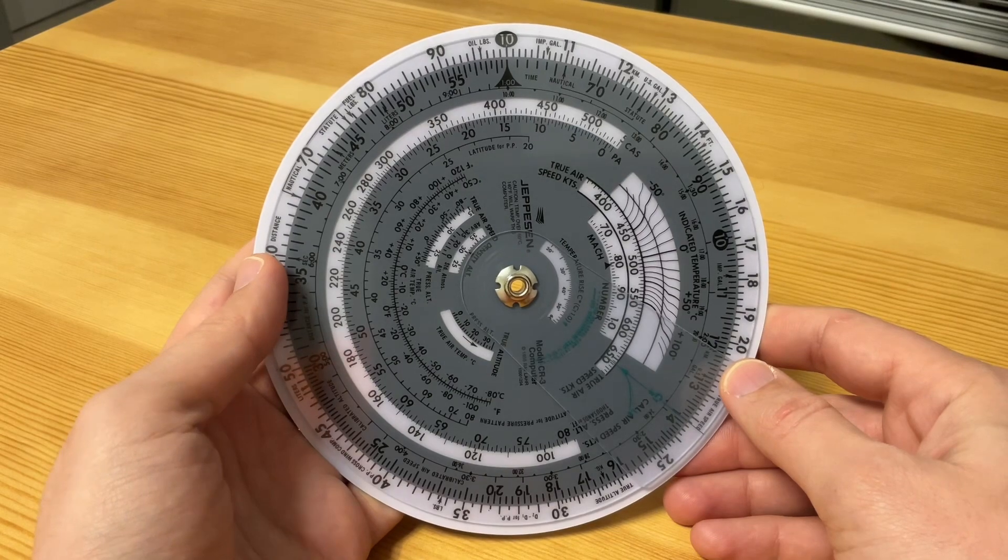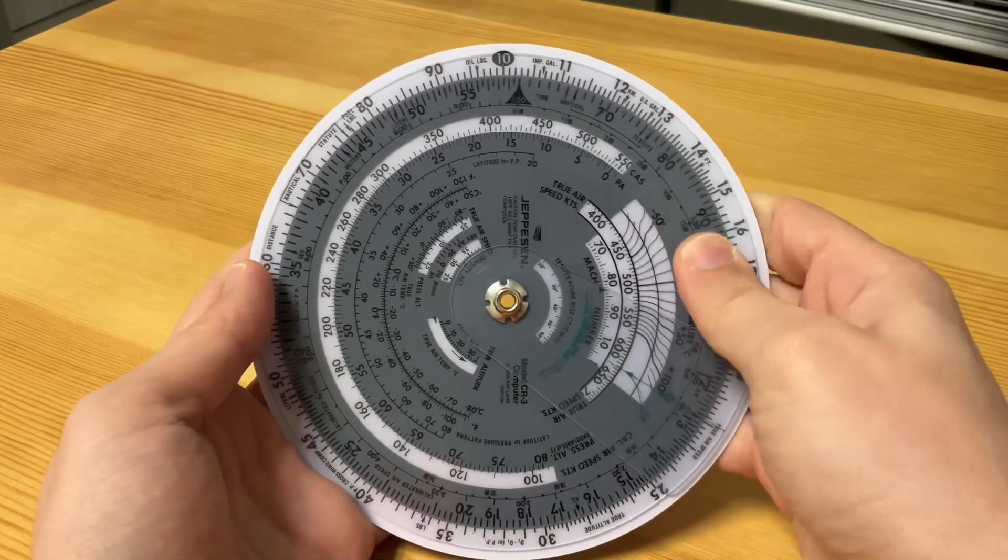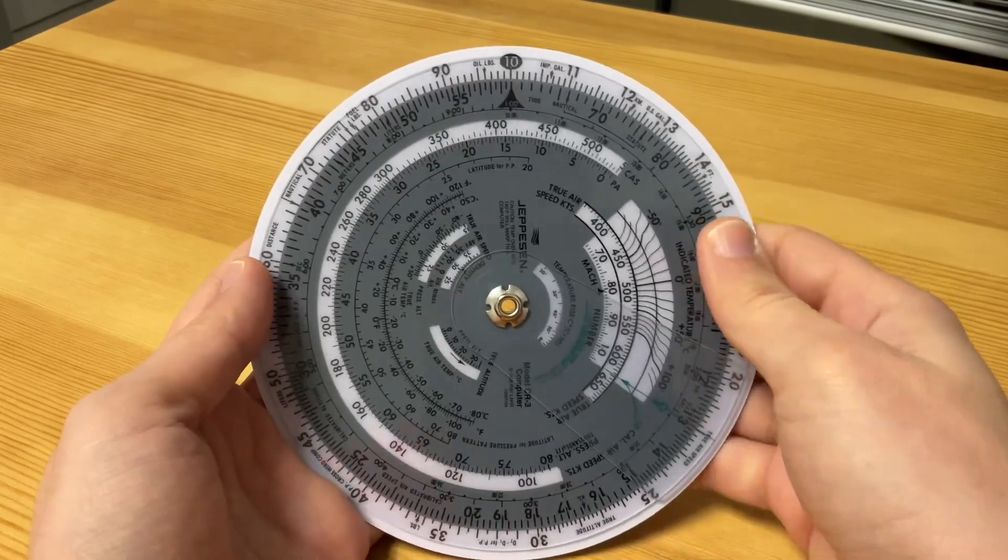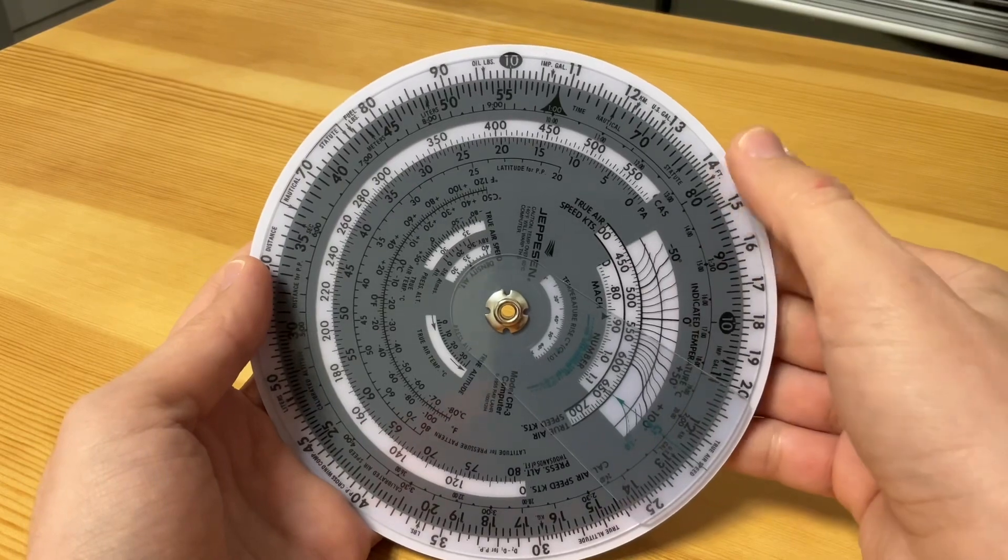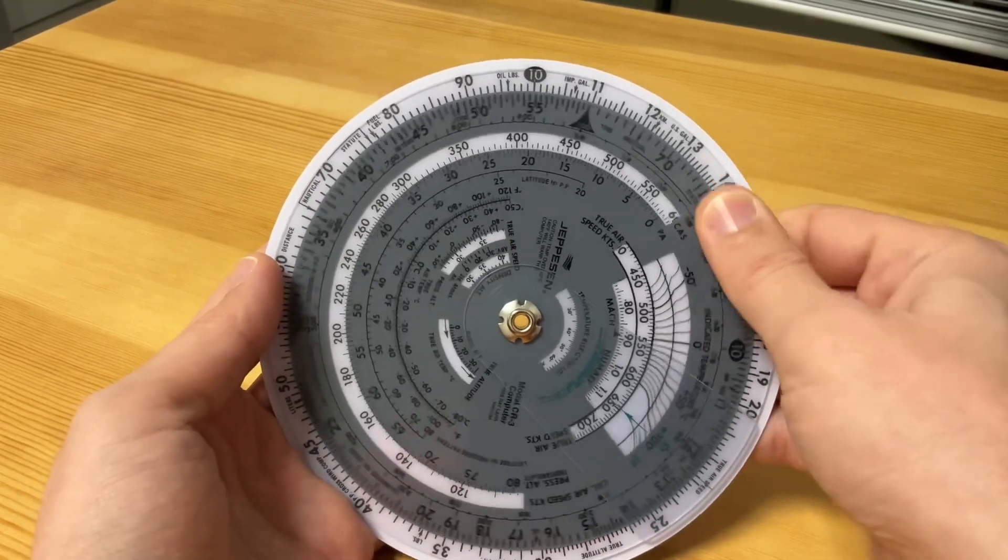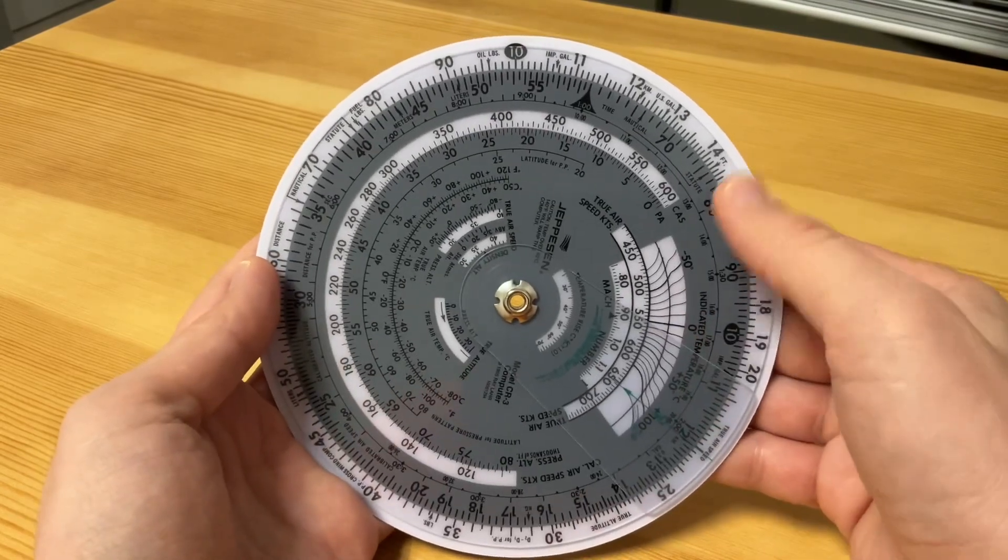There is a moving circle, so we call this the variable portion, and the other disk is the fixed portion. This is the variable portion and this is the fixed portion.